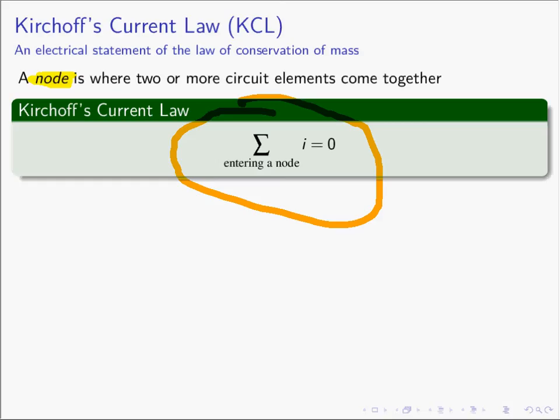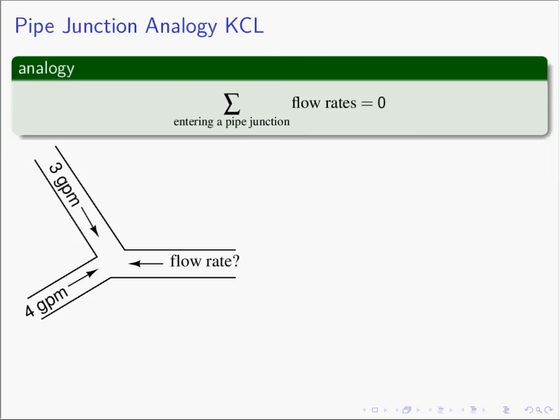Kirchhoff's Current Law is the conservation of mass from an electrical point of view. Before we do examples of KCL, let's use our analogy. The analogy for charge is a water molecule, and the analogy for current is a water flow rate or fluid flow rate. The hydraulic analogy of KCL would be: the sum of the flow rates entering a pipe junction equals zero. The node is where two or more electrical elements come together, which is tantamount to a pipe junction in a fluid system.